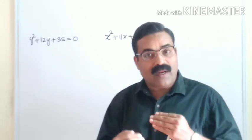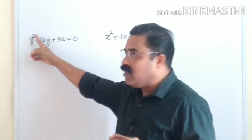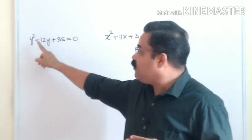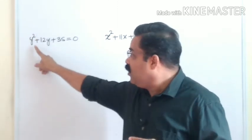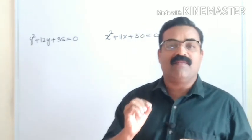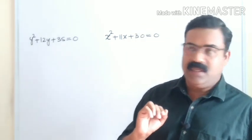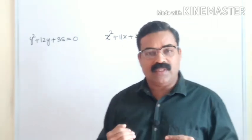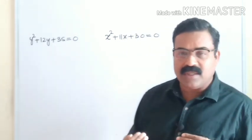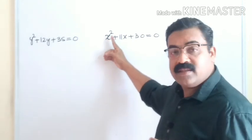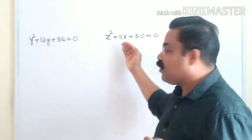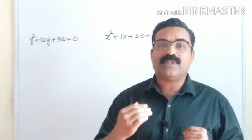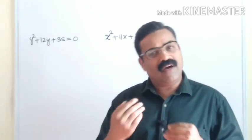A quadratic equation has degree 2, that is power 2. When you solve a quadratic equation like x² + 11x + 30 = 0, you will get two different values for x. It is a quadratic equation because the degree is 2. So how do we solve this quadratic equation? We have different methods, and in this video I am talking about the shortcut method.